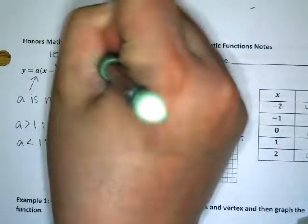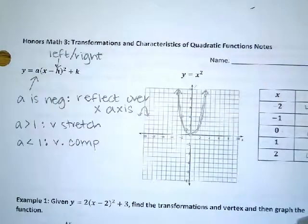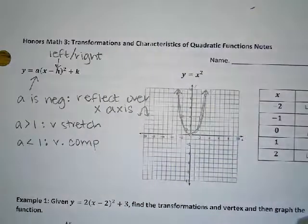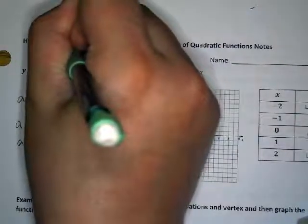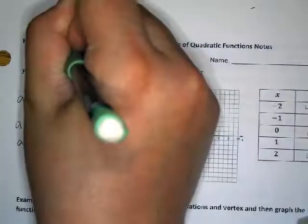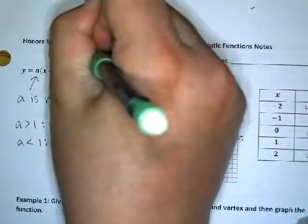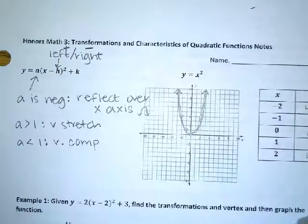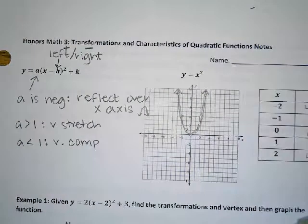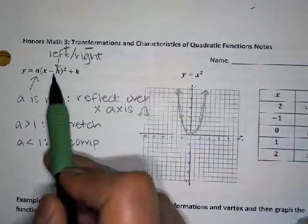The horizontal shift is the opposite of what you would think. If it's a positive number inside, it moves the graph to the left. If it's a negative number inside, it moves it to the right. It's kind of backwards — you have to think about how you would get out of the parentheses.